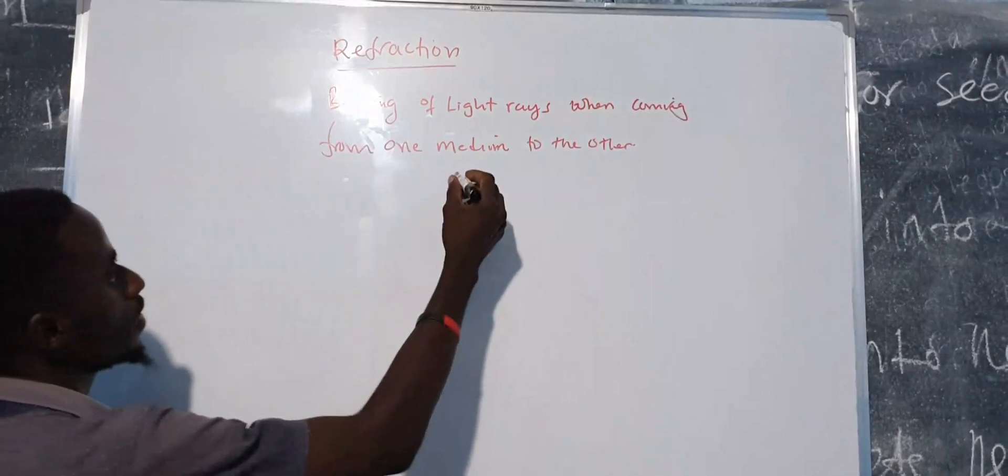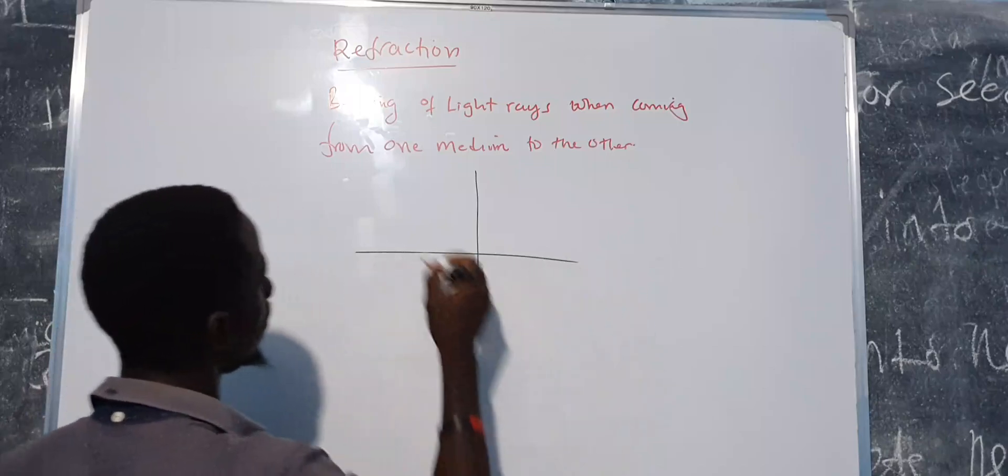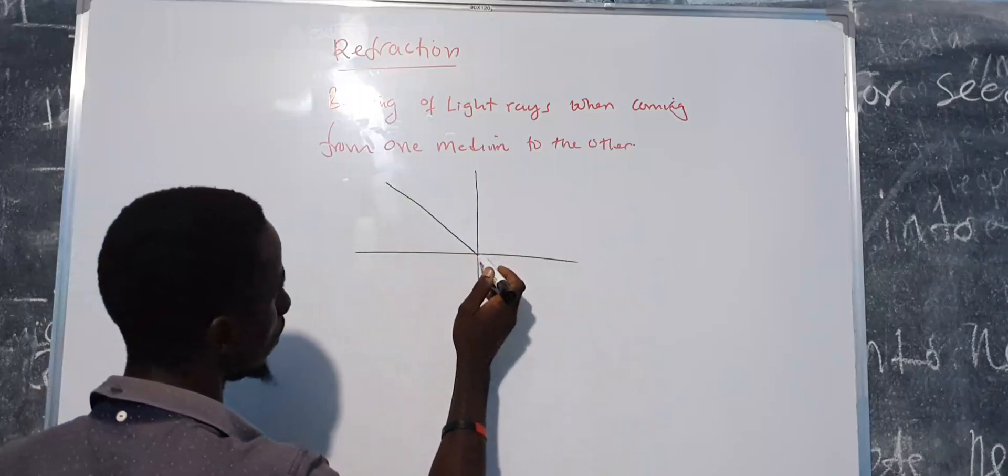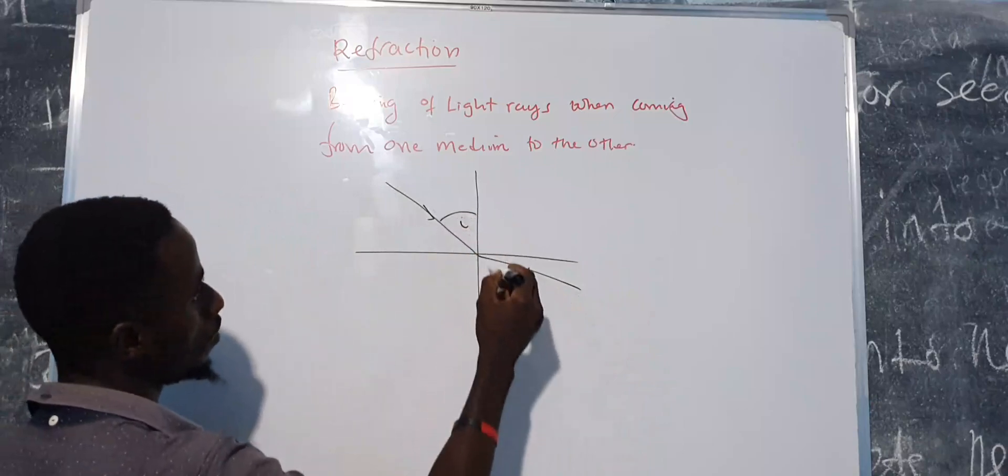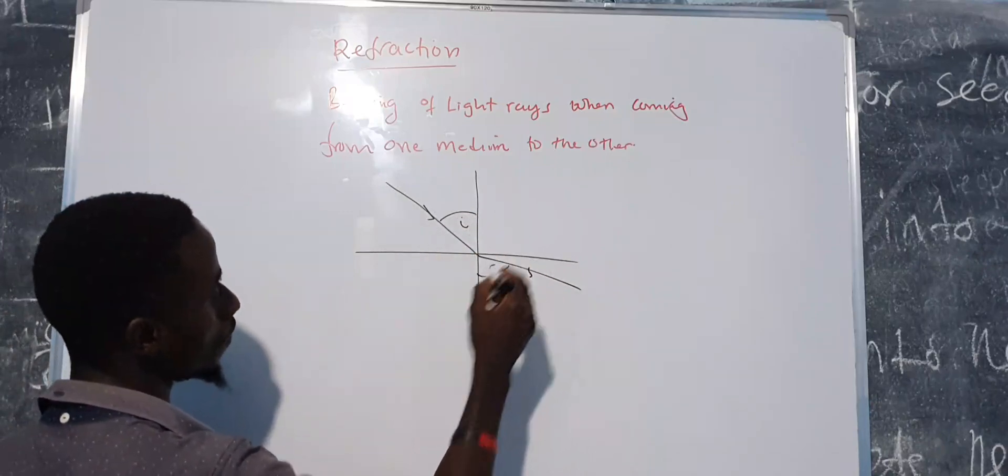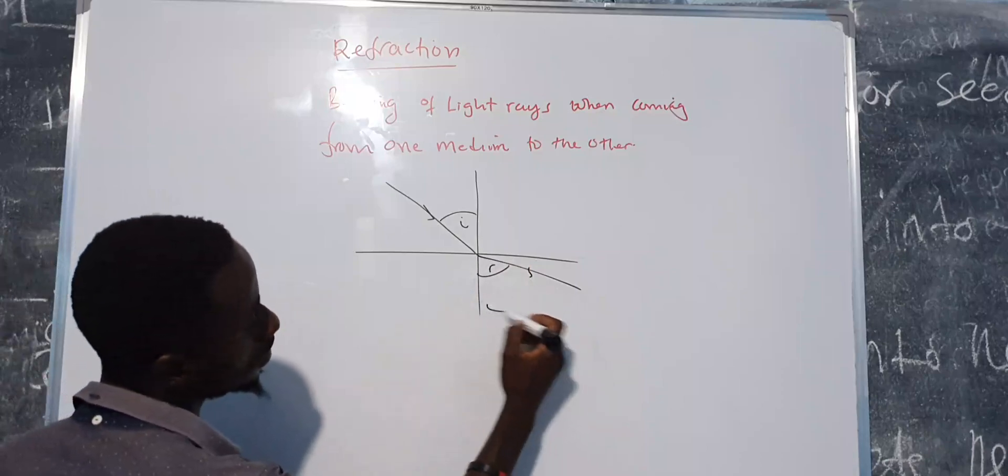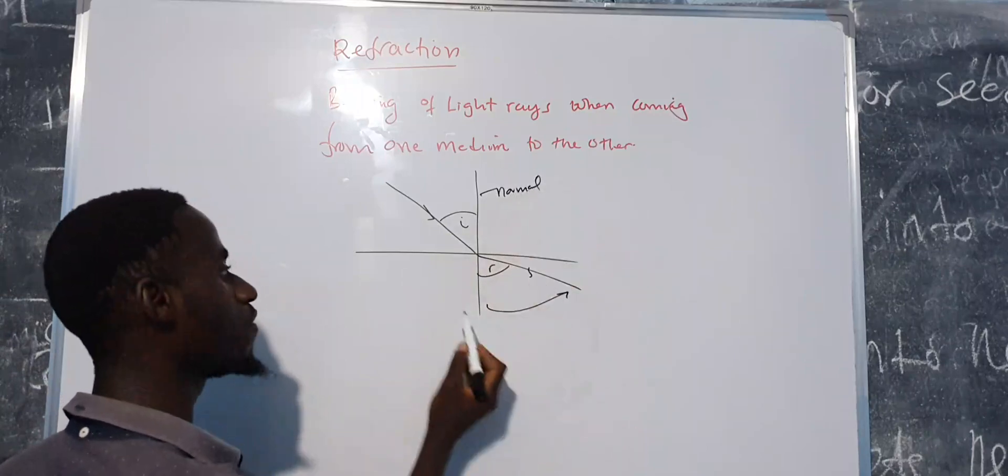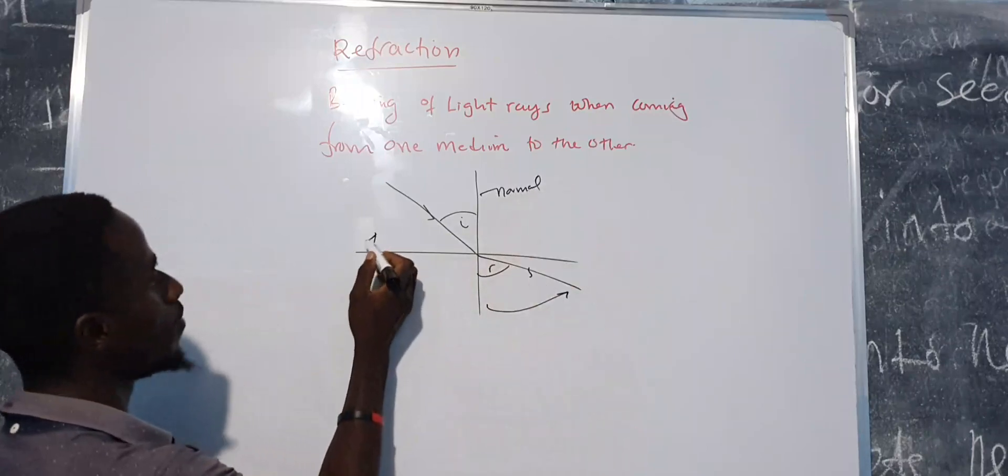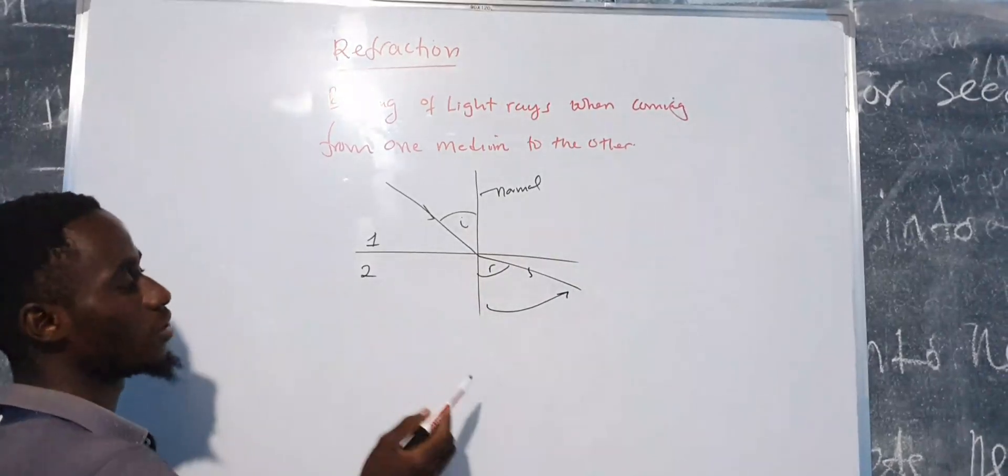Now there are two instances that you need to know. So when light is moving, let's say this is light coming, goes like that. What does this have to tell you? Look at this angle and this angle. The refracted ray has moved away from the normal. Remember this, the normal. It has moved down from the normal.